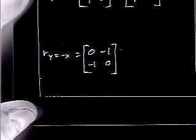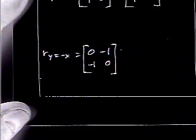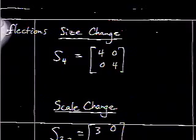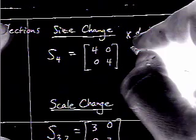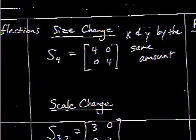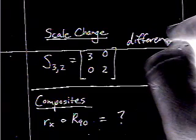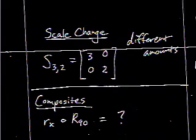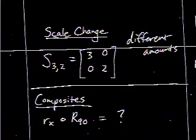Another type of change besides reflecting is a size change. A size change is when you change x and y by the same amount — for instance, a size change of 4 would be the matrix with 4, 0, 0, 4. That's different from a scale change, where x and y change by different amounts — for example, tripling the x's and doubling the y's. We've talked about scale changes before with equations, so this is just the same idea in matrix format.